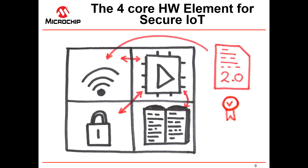How does it look with software? You have your new firmware version 2, you get it certified with a certification certificate, it goes over the air into your device through your microcontroller, and first it stores in the bulk storage. The secure element then validates it, and it has an additional feature: secure boot. It can check if it is genuine new firmware before pushing it into the microcontroller. Software is key in this matter.